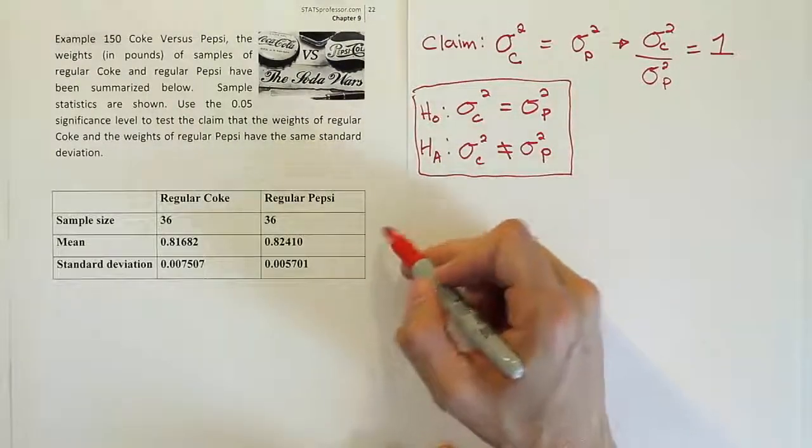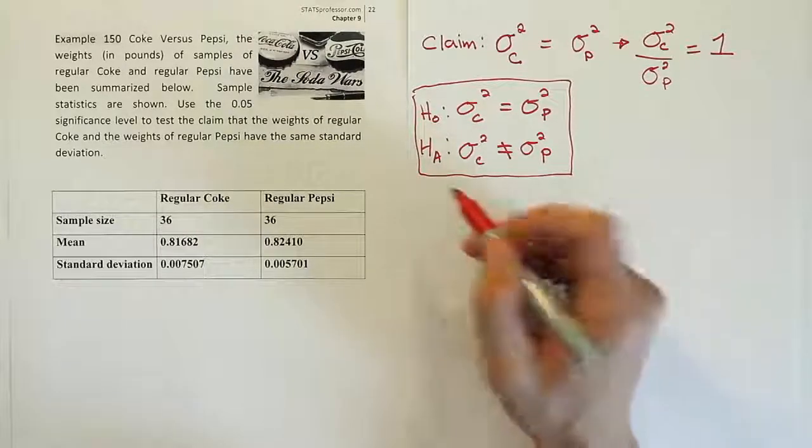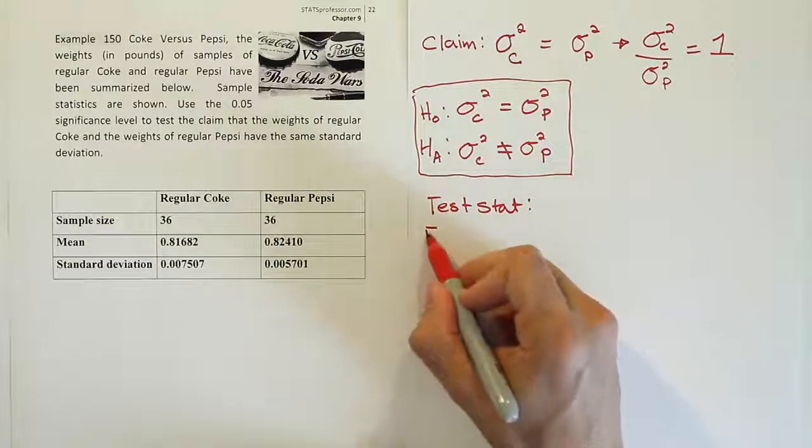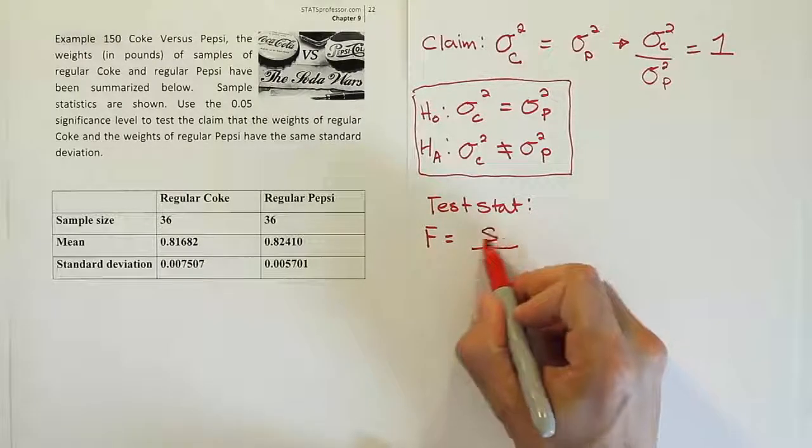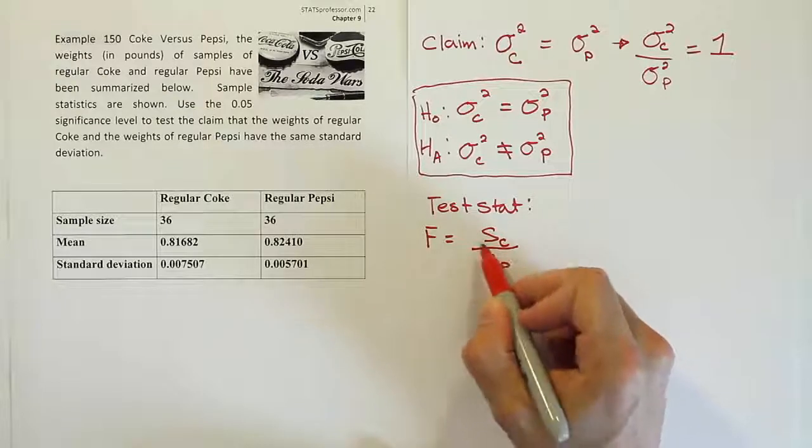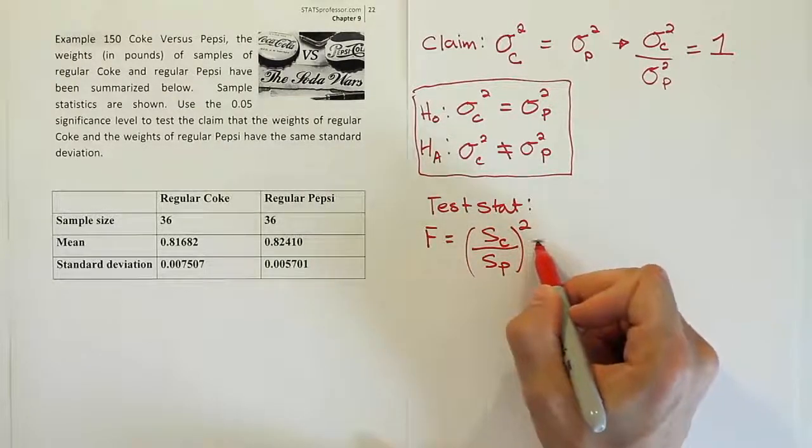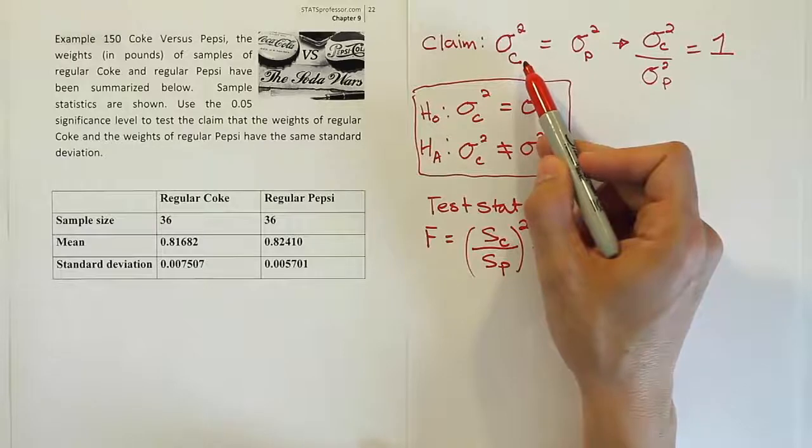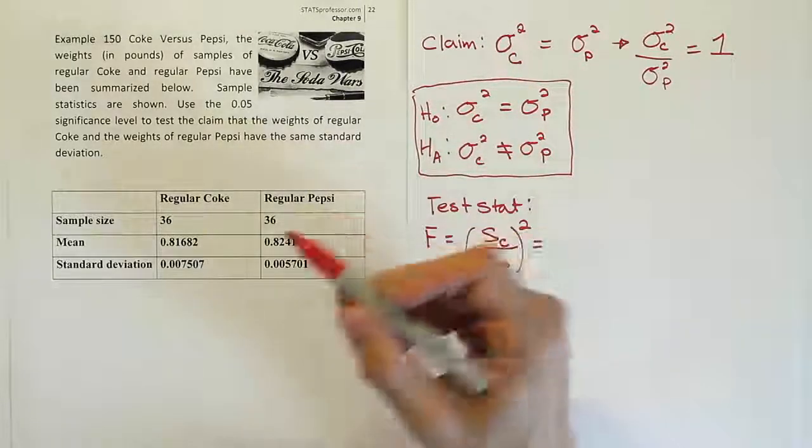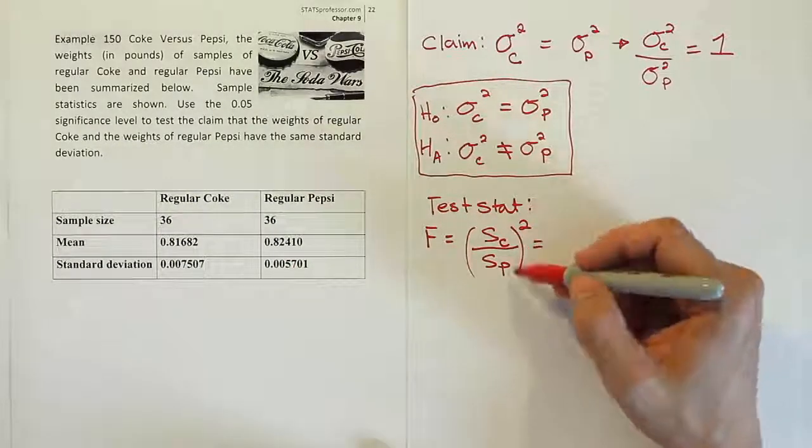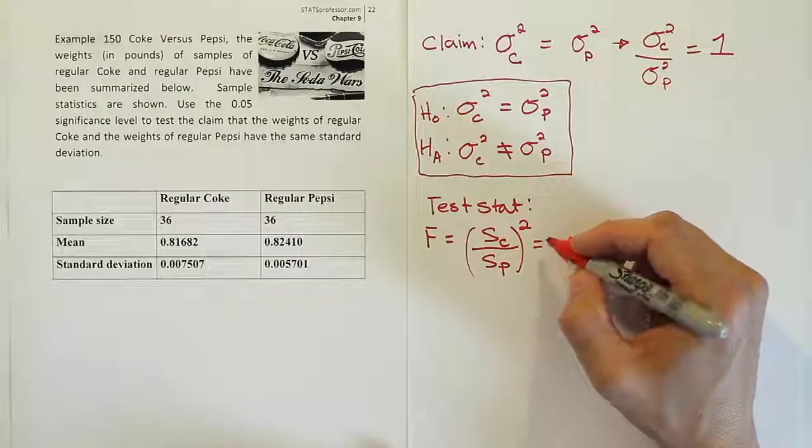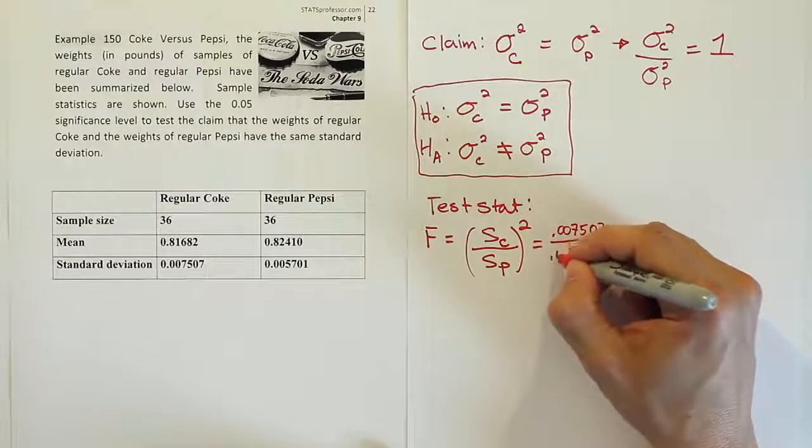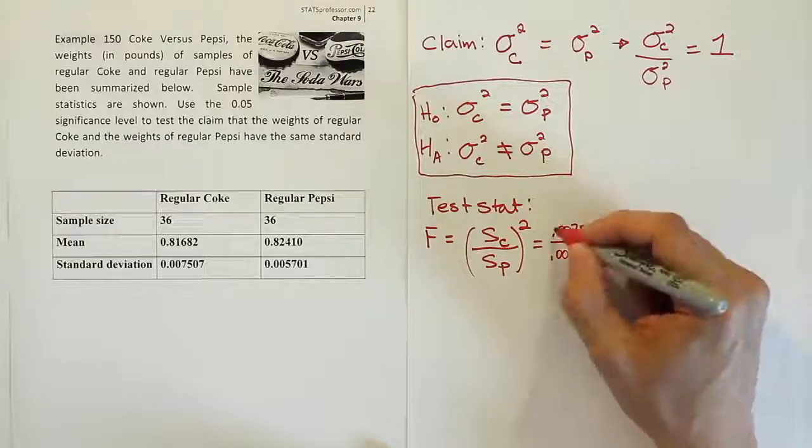Next step is to get the data. Now the data is already here, so I'm just going to leave the data there and jump right to our test stat then. So our test stat, remember, is F. And the way we do it is we create a ratio. So in this case, we're going to have the standard deviation for Coke divided by the standard deviation for Pepsi, and then we're going to square that fraction. Now again, why did I put Coke on top? Because Coke is the first number in my claim here. So I want to make sure that I'm consistent. If I use it in my claim first, I use it here first, and then also it's because the Coke value is larger than the Pepsi value. I won't ensure the number is 1 or larger when I do the calculation. Okay, so I end up with 0.007507 divided by 0.005701. And then I square.